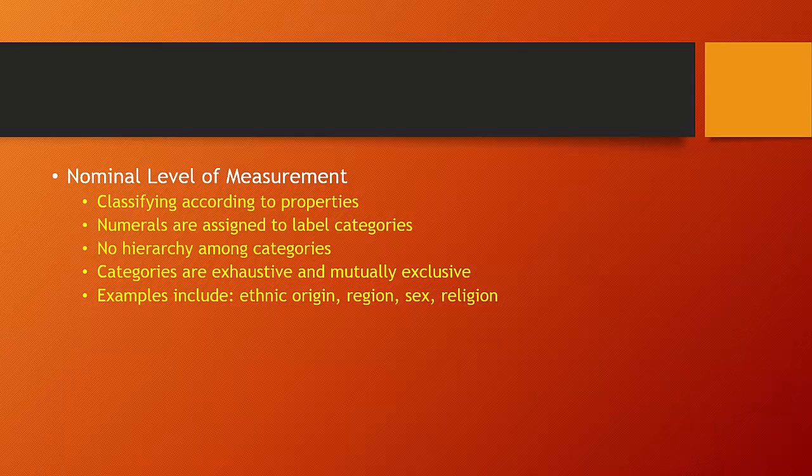Let's start with the nominal level of measurement. The nominal level of measurement represents the lowest level of measurement. It involves classifying a variable into two or more categories and then sorting our observations into the appropriate category. The numbers simply serve to help us label the categories.